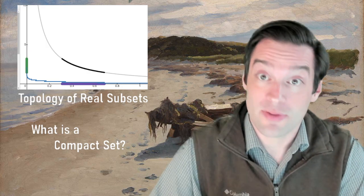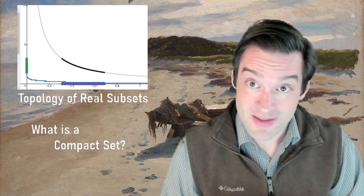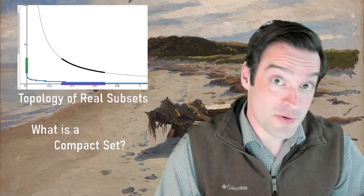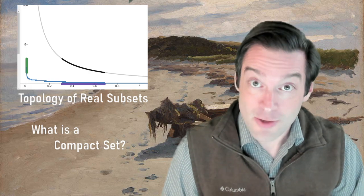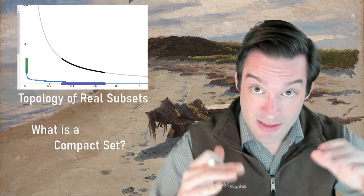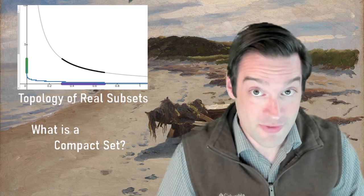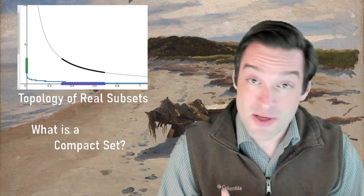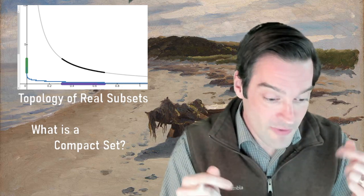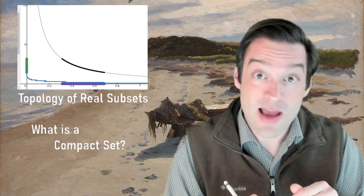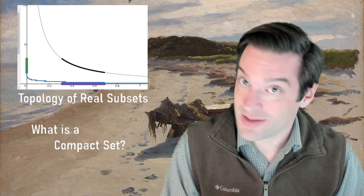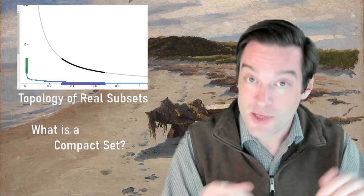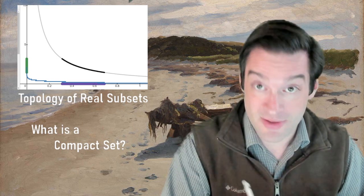We have two ideas for how to get around this phenomenon. The first is called cover finiteness: we look for sets which never require infinitely many open sets to cover them. Even if you give me infinitely many open sets, I can pull out a finite subcollection that does the same job — we call those the cover finite, or CF, sets. The other idea is based around sequences: subsequentially complete sets, or SC sets, are those where every sequence of points from the set has a subsequence which is convergent, and moreover, the limit of that subsequence is still a point of the set.